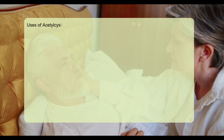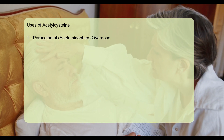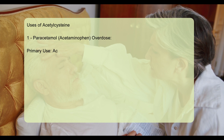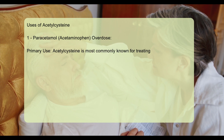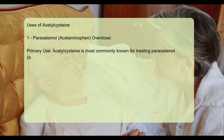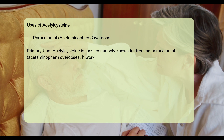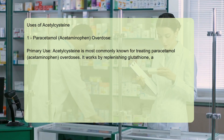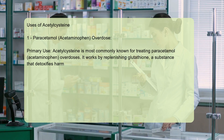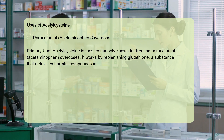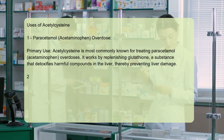Acetylcysteine uses: For paracetamol/acetaminophen overdose. Acetylcysteine is most commonly known for treating paracetamol/acetaminophen overdoses. It works by replenishing glutathione, a substance that detoxifies harmful compounds in the liver, thereby preventing liver damage.